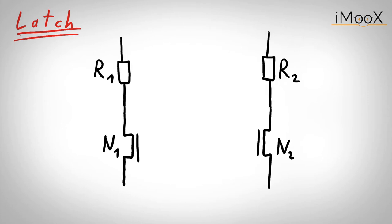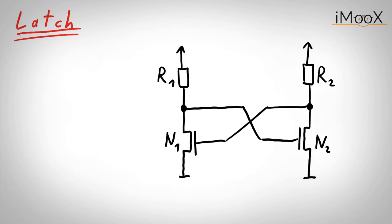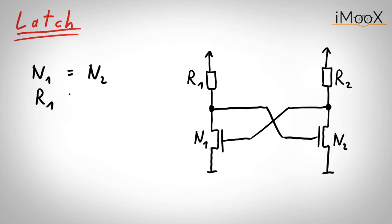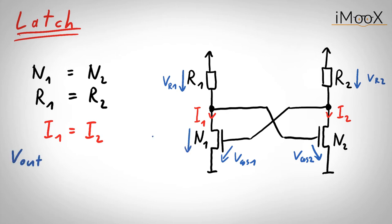A simple latch can be built with two transistors and two resistors, whereas the transistors are cross-coupled. Now, let us first assume that the transistors and the resistors are the same, so both branches are exactly equal. This also leads to the voltages and currents in the branches being equal. The outputs are denoted as V_out1 and V_out2.